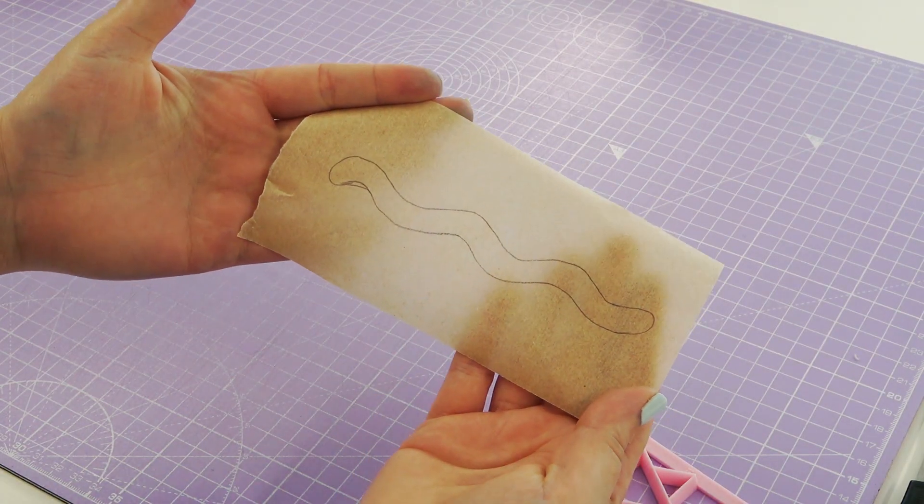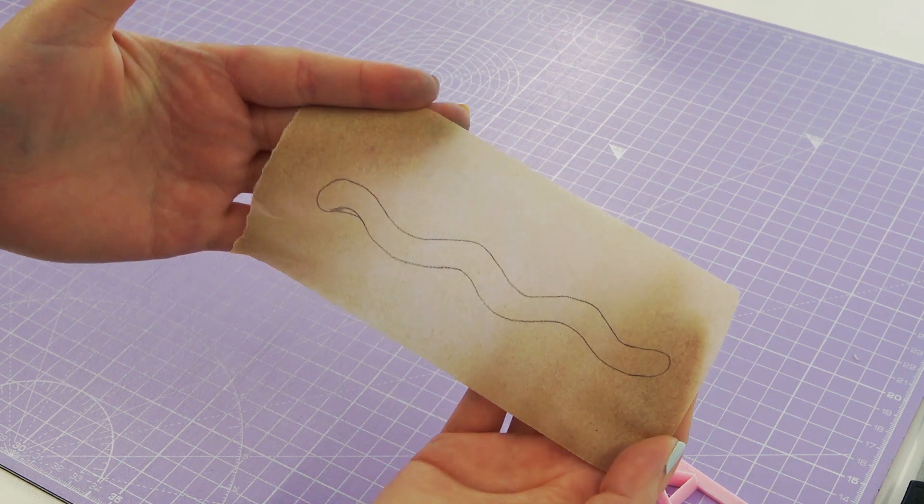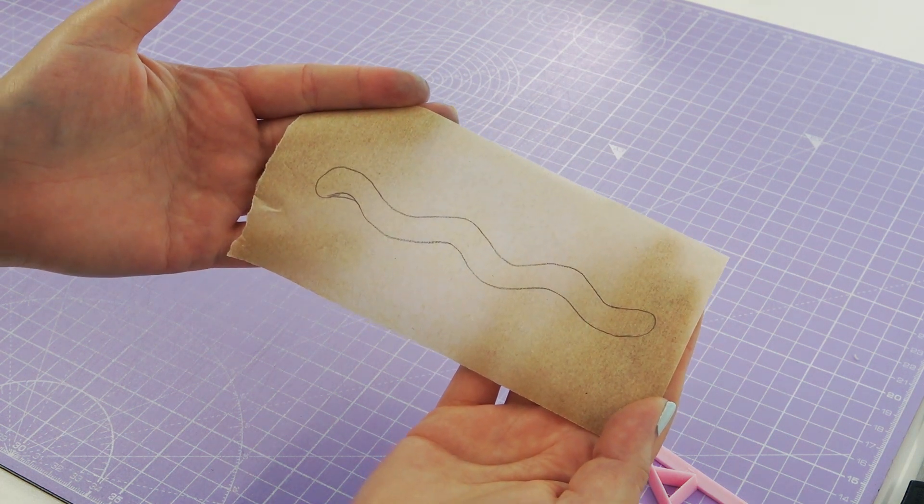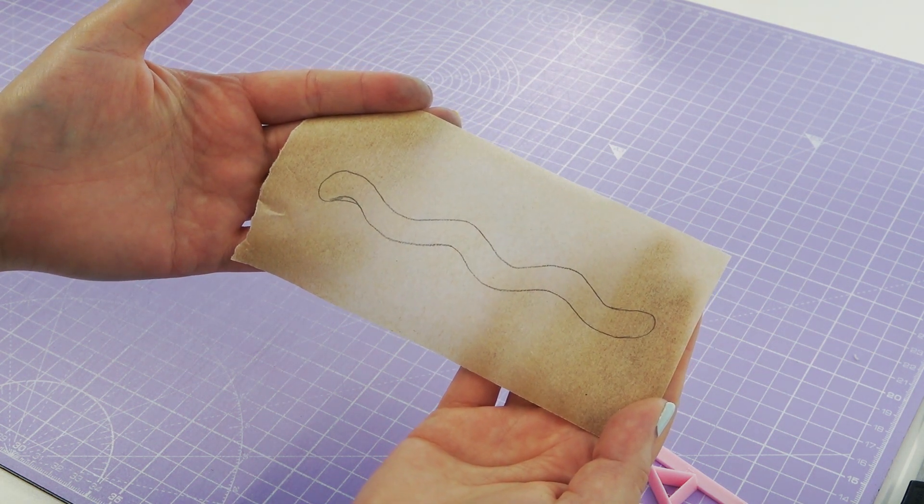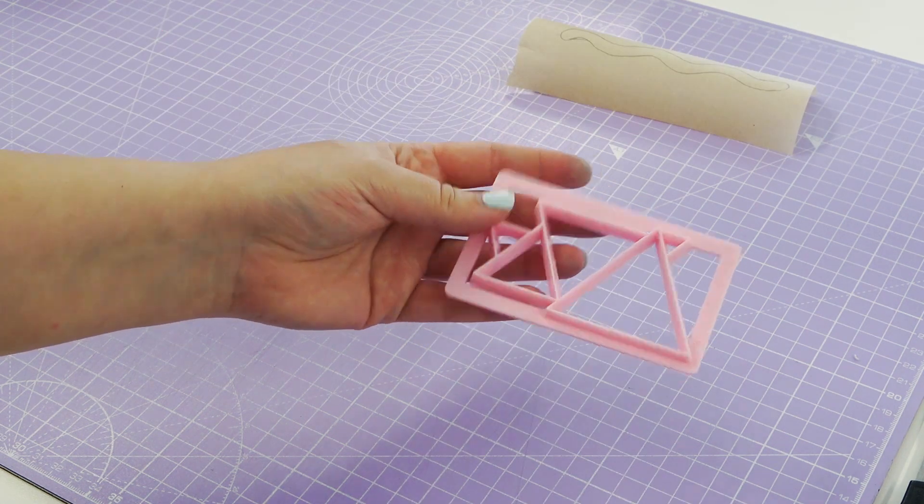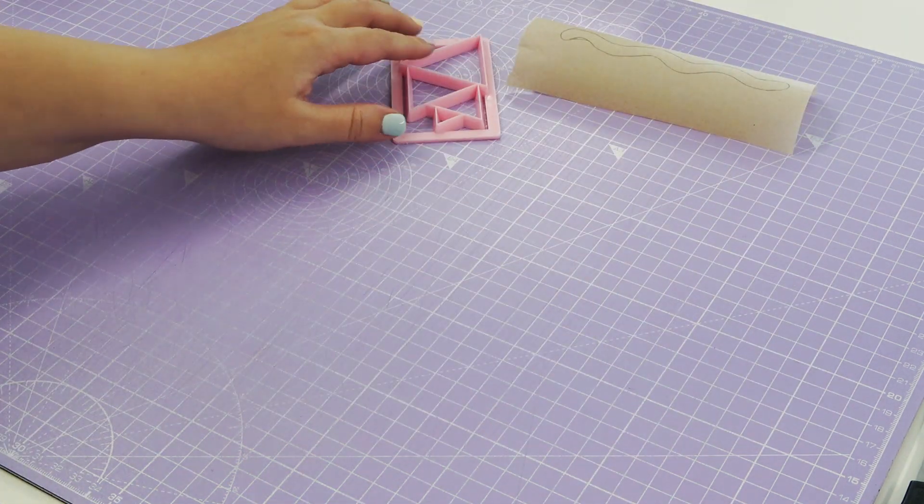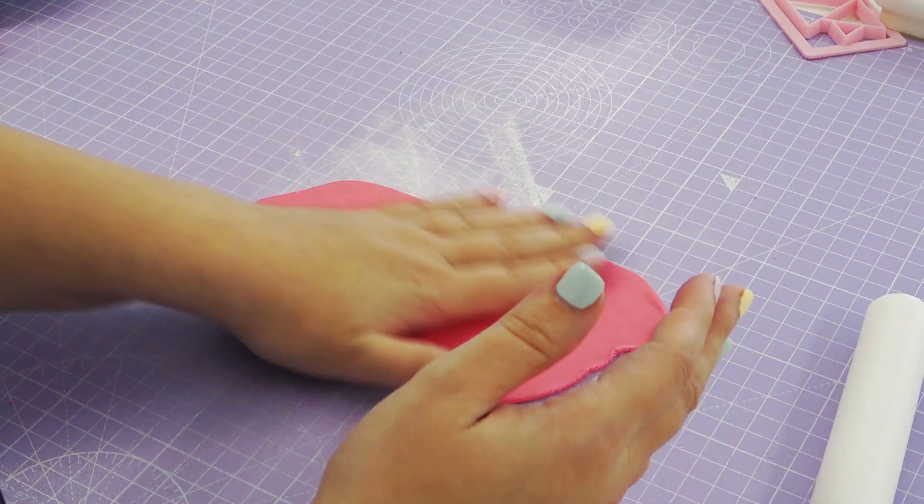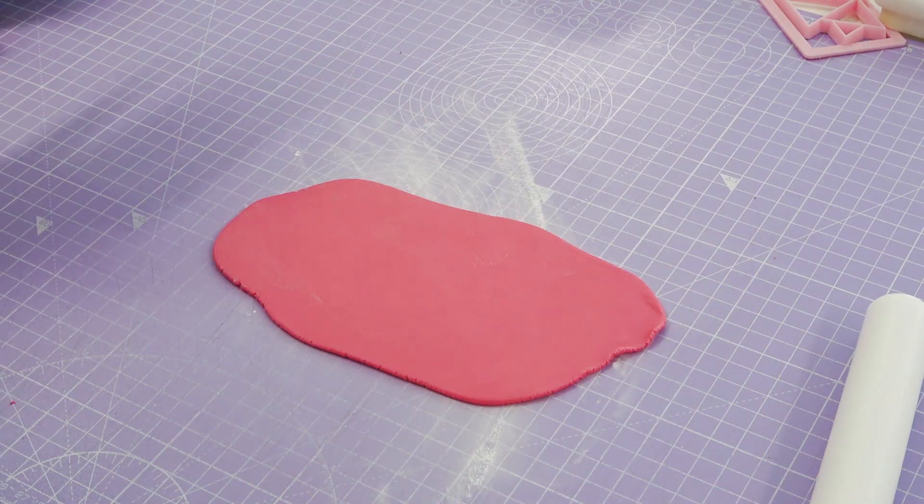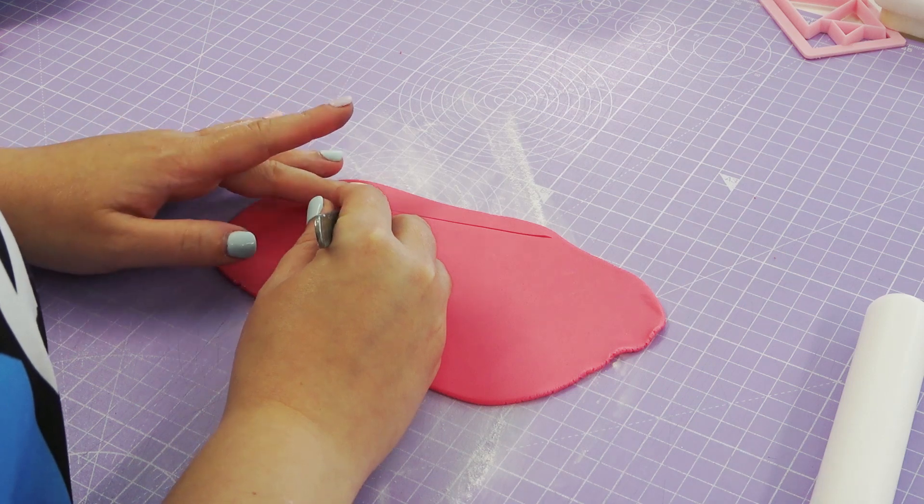Next I've drawn out a wiggle shape on some greaseproof paper. I'm going to be cutting shapes out of sugar paste mainly using wiggles, triangles and circles. You can also use a triangle cutter if you have one or you can just hand cut them like I'm going to do. I'm first laying down some hot pink and I'm cutting out a large triangle to contain my numbers.